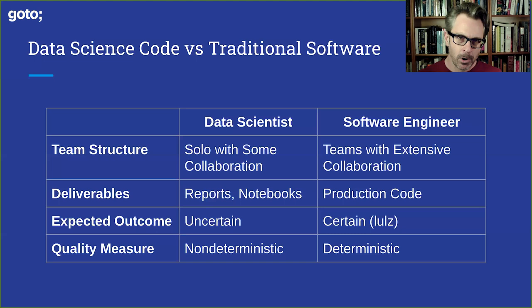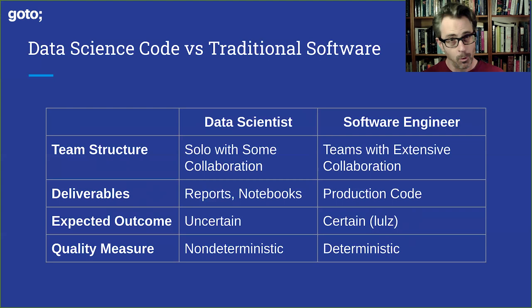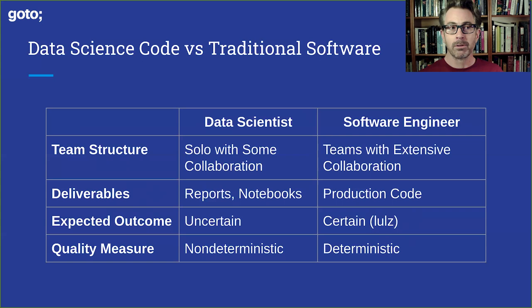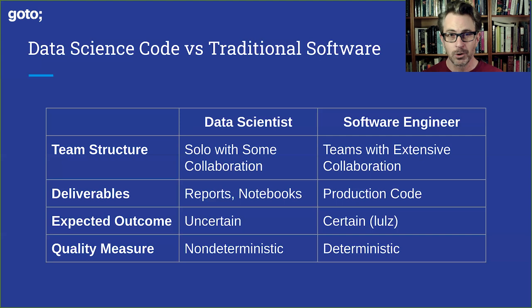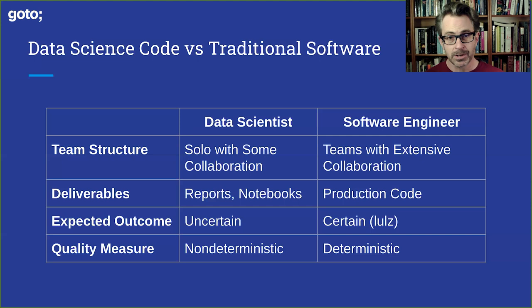Most folks here at GoTo will be in the software camp. Software engineers are used to working in teams. Software engineers ship production quality code. Expected outcome? Absolutely certain 100% of the time. There's no uncertainty in the software development process — in theory, with enough precision, it can be precise. That is very different from data science, which is not precise. No matter how finely tuned and specified you get, your outcome is not known ahead of time. And quality measures for software are usually deterministic — pass-fail tests, very simple assertions. You can write a lot of them and have very robust tests, comprising small, highly deterministic processes.